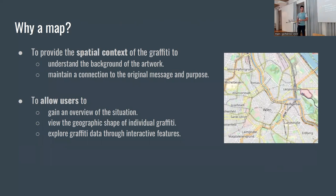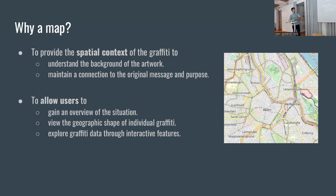Why does this matter when we talk about graffiti? It's been mentioned before that graffiti is highly contextual — it depends a lot on the context where it was created. The spatial context helps to understand the background of the artwork and to maintain a connection to the original message and purpose. The map also helps users get an overview from a wider scale and then from a close-up scale to view the geographic shape of individual graffiti.